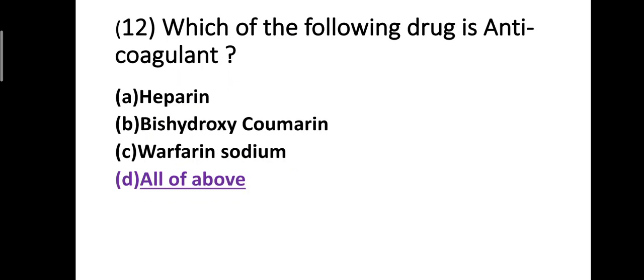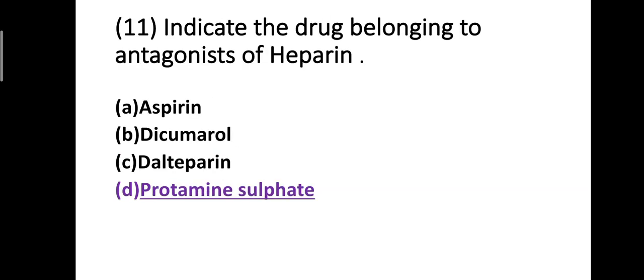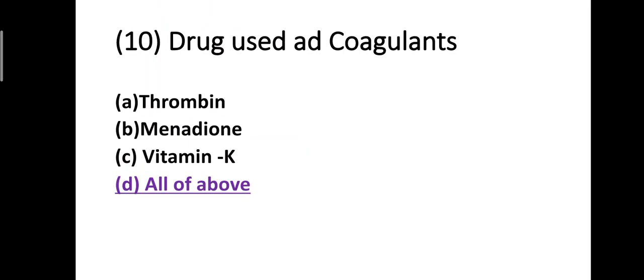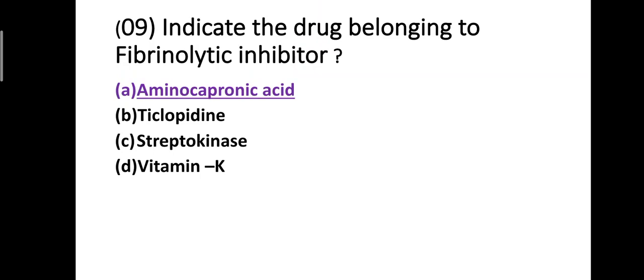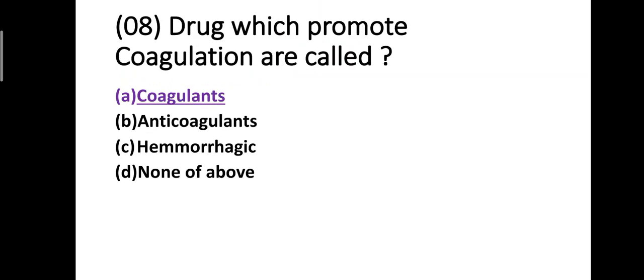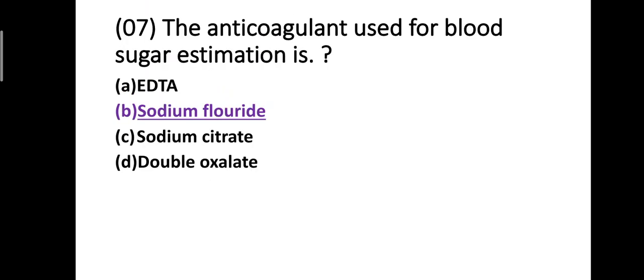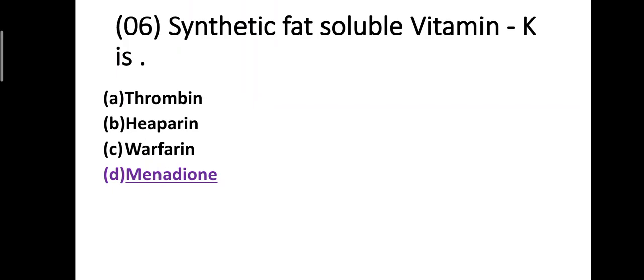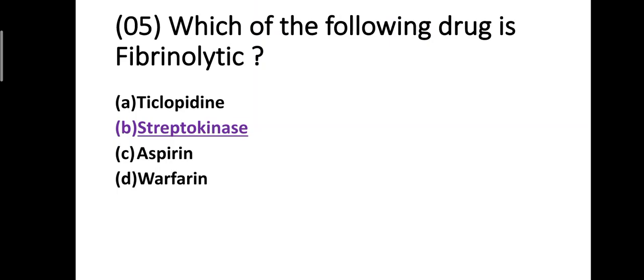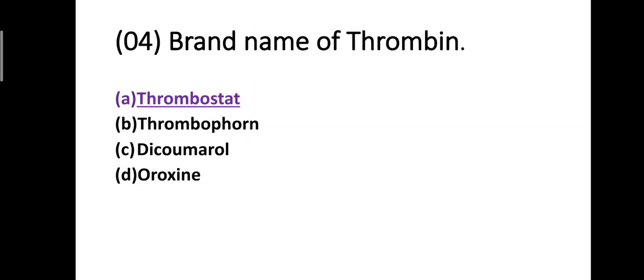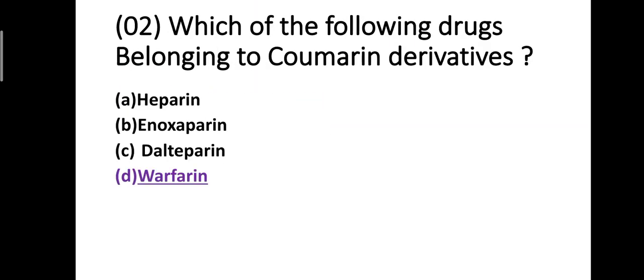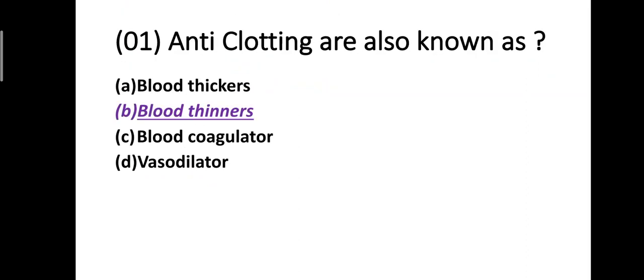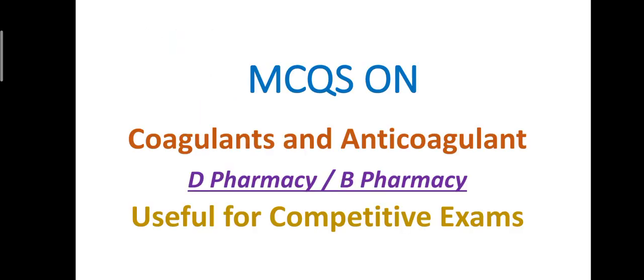Quick recap: Anticoagulants include heparin, bishydroxycoumarin, and warfarin sodium. Protamine sulfate is the antagonist of heparin. Thrombin, menadione, and vitamin K are coagulants. Aminocaproic acid is a fibrinolytic inhibitor. Sodium fluoride is used for blood sugar estimation. Synthetic fat-soluble vitamin K is menadione. Streptokinase is fibrinolytic. Thrombin's brand name is Thrombostat, stored at cold temperatures. Warfarin belongs to coumarine derivatives. Anti-clotting agents are known as blood thinners.